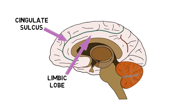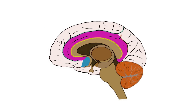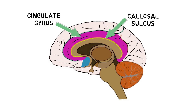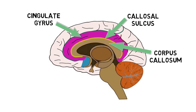The cingulate sulcus extends back to the subparietal sulcus, which often appears to be a continuation of the cingulate sulcus, but in many brains is a separate sulcus. Just below the cingulate sulcus is the cingulate gyrus, an important part of the brain thought to be involved in a variety of emotional, cognitive, and behavioral functions. A sulcus called the callosal sulcus separates the cingulate gyrus from the corpus callosum, a structure that connects the left and right cerebral hemispheres, enabling communication between them.